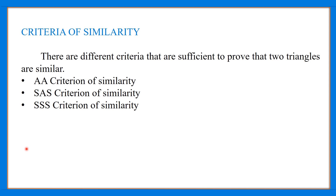By using the concept of similarity, here are some criteria which will help us prove that two triangles are similar. The three criteria are: AA criterion of similarity, SAS criterion of similarity, and SSS criterion of similarity. AA stands for Angle-Angle, SAS stands for Side-Angle-Side, and SSS stands for Side-Side-Side.